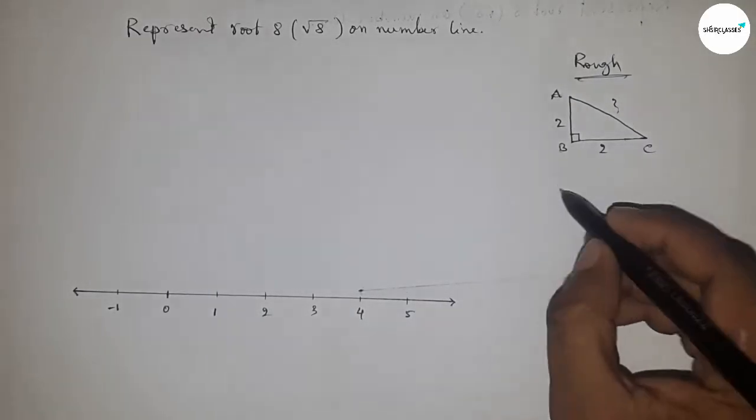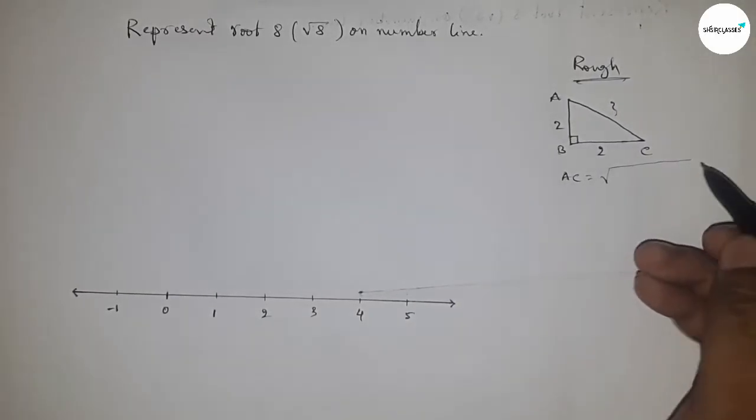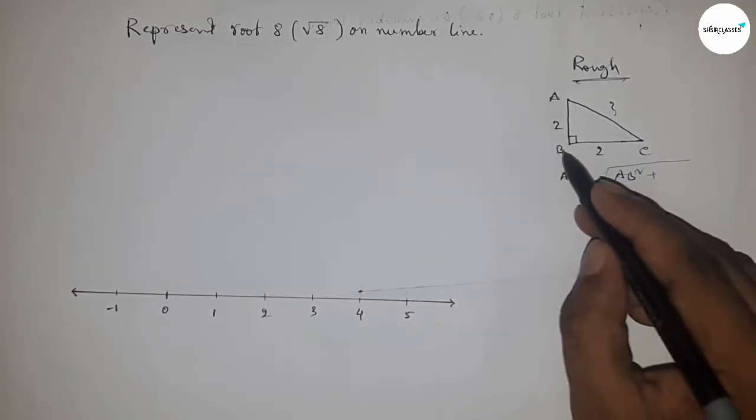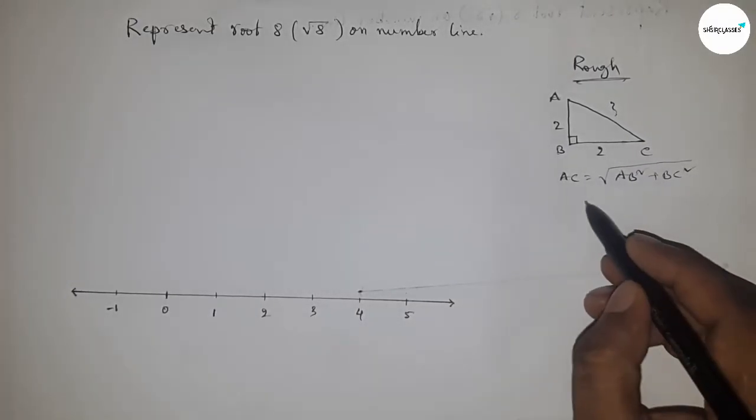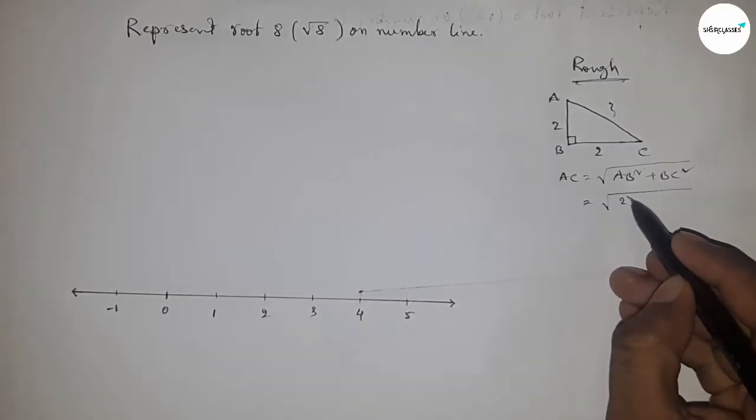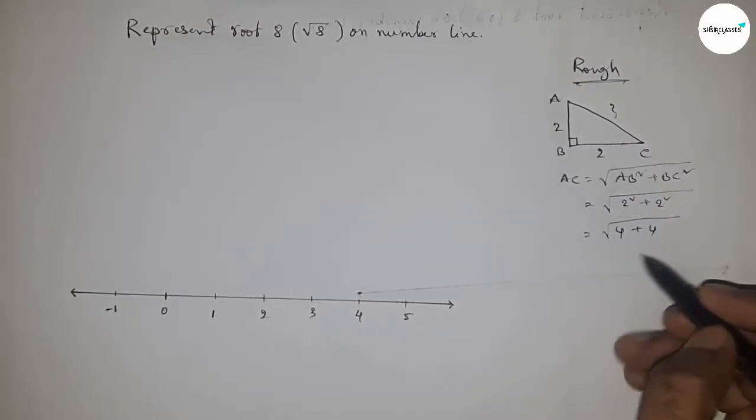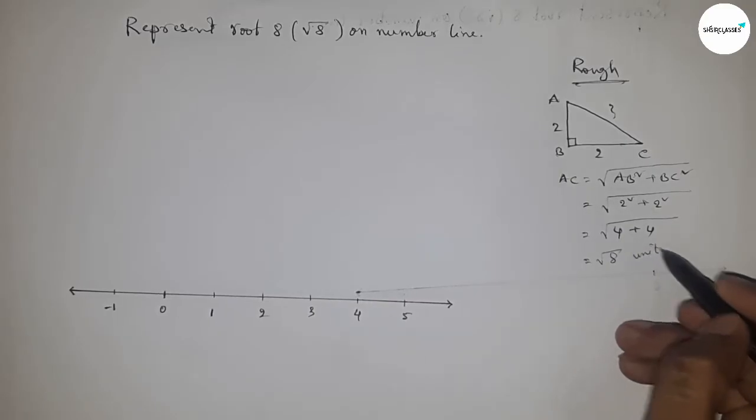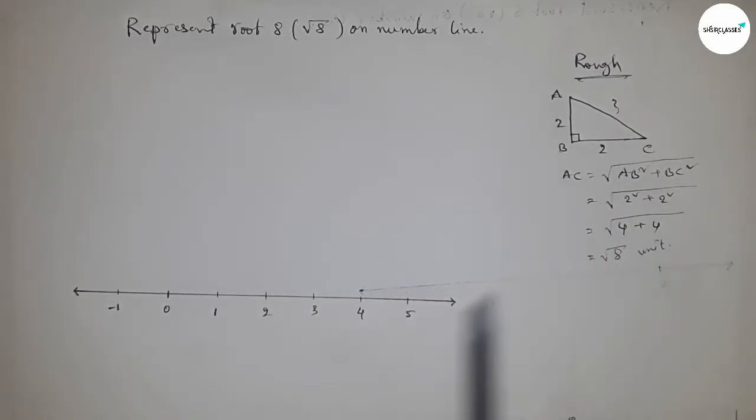By Pythagoras theorem, hypotenuse equal to root over base square plus height square. Now, two square plus two square, so four plus four, so this is root eight unit. So this concept...